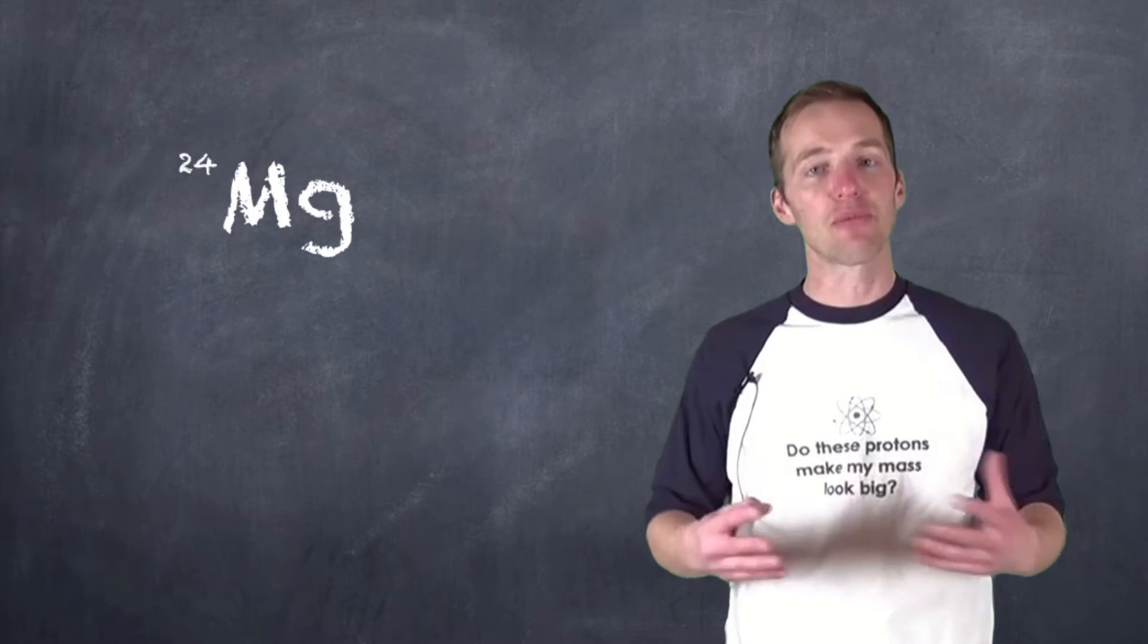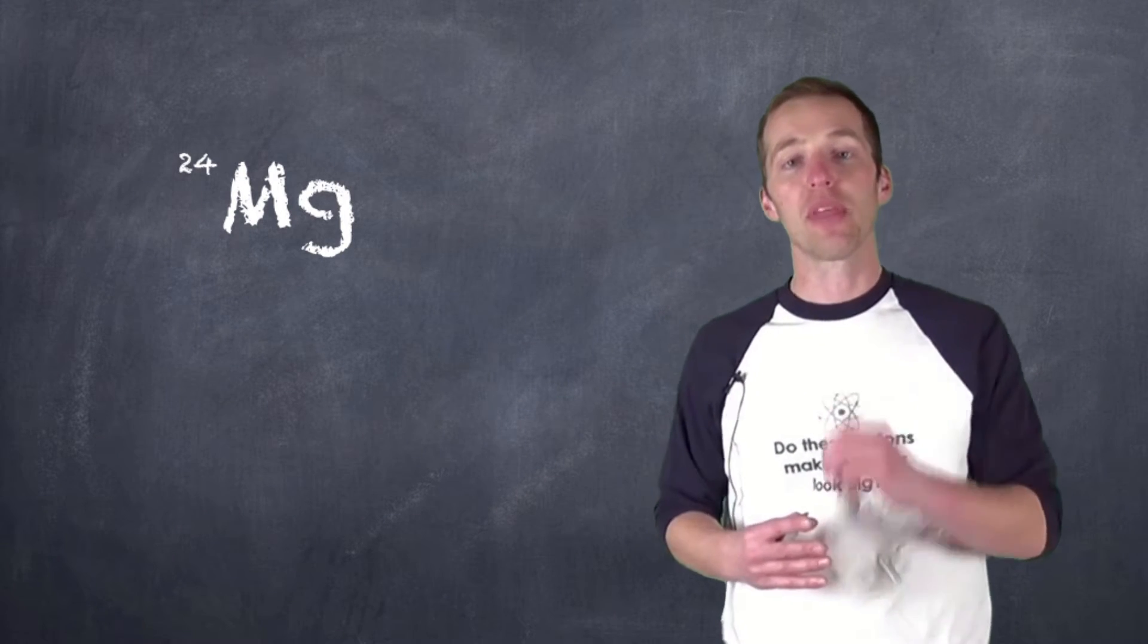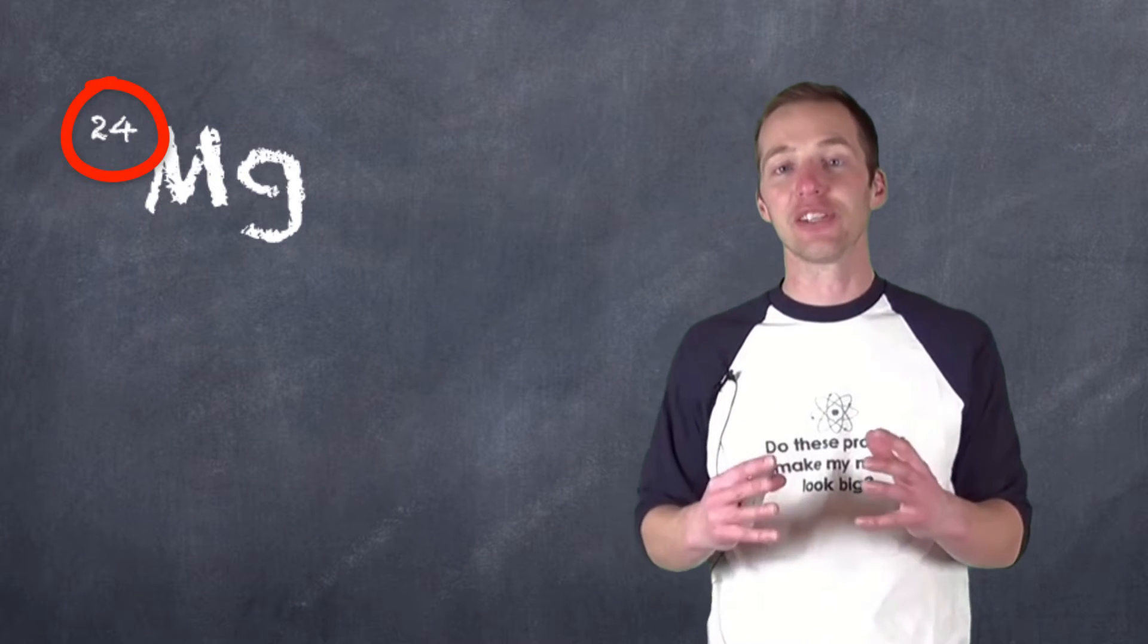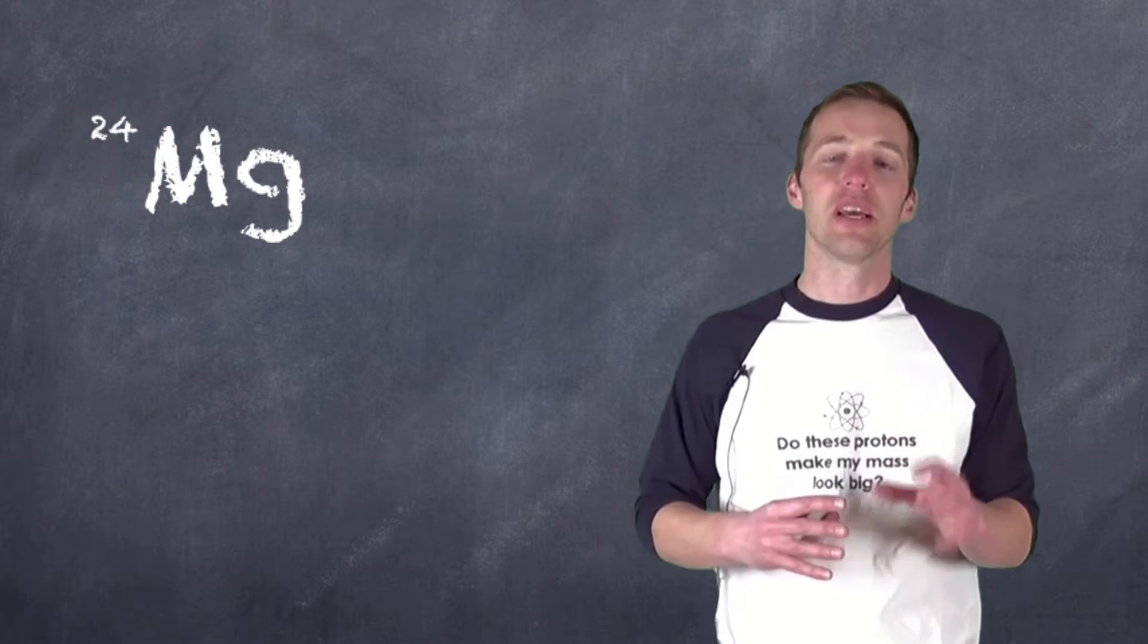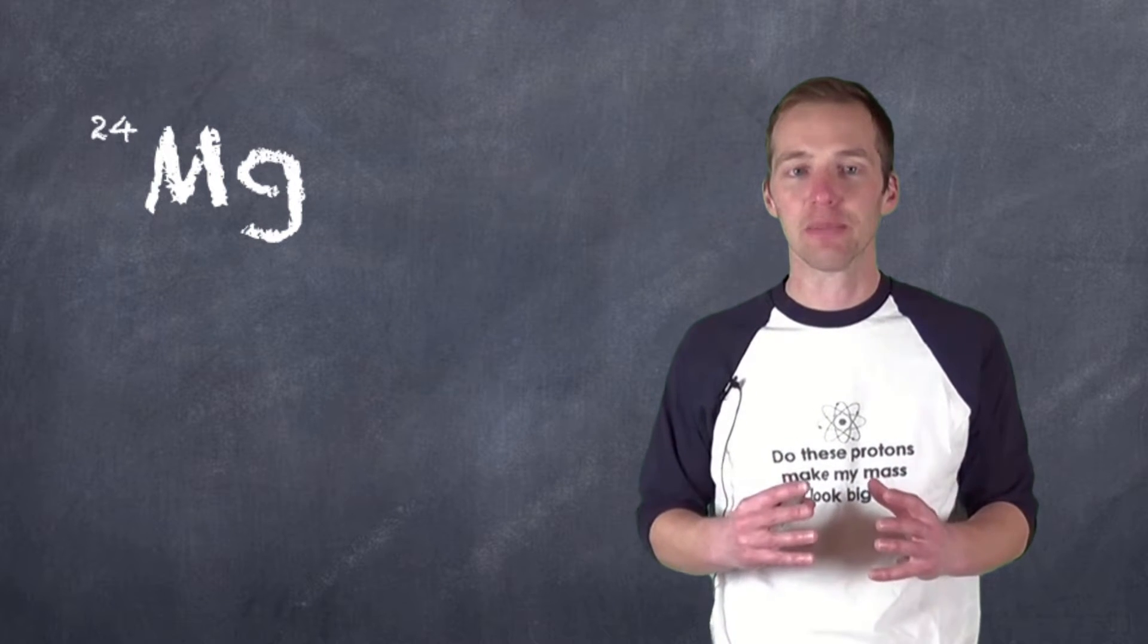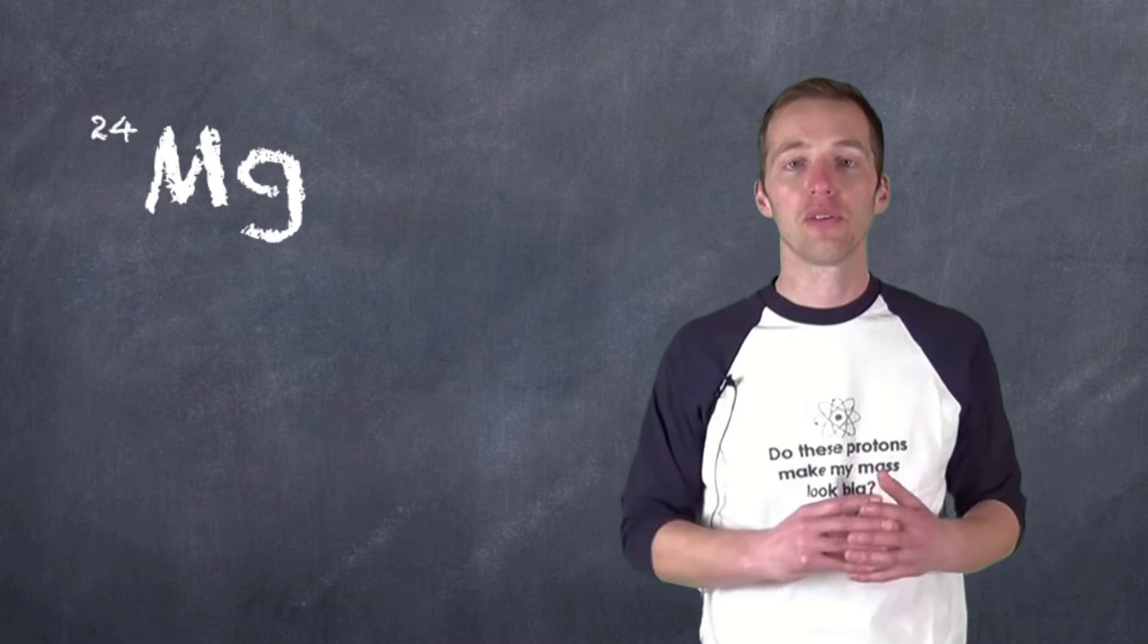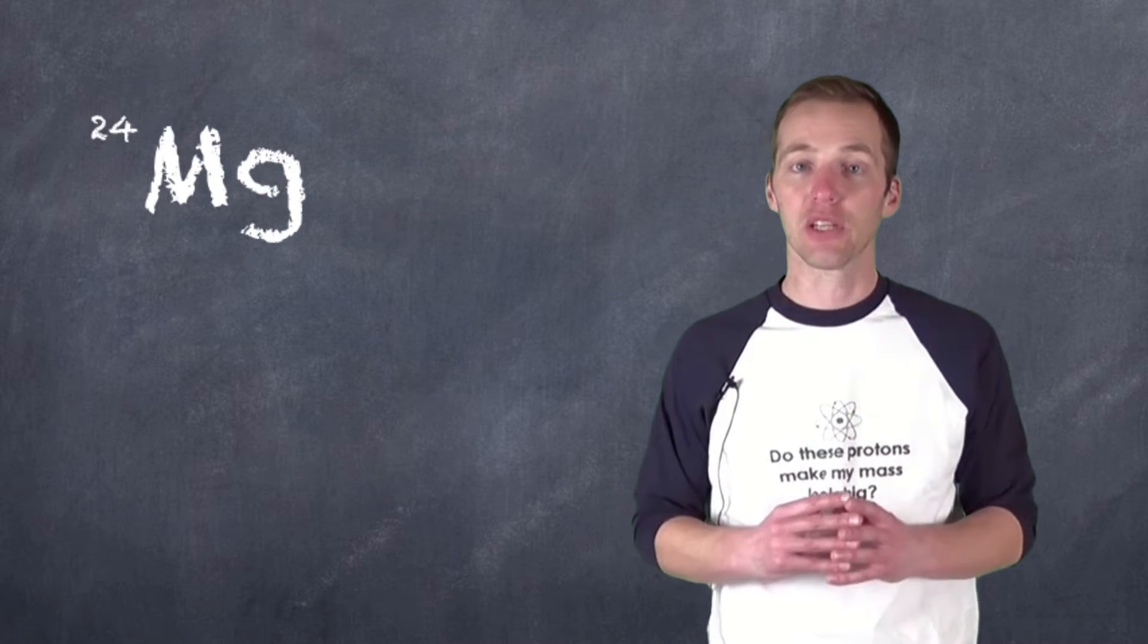Now, magnesium has several naturally occurring isotopes. We have magnesium-24, and remember, that 24 is an isotope symbol. It tells us that that is the mass number of that particular magnesium, so that those are the total number of nucleons, 12 protons, 12 neutrons that we have for that particular magnesium.